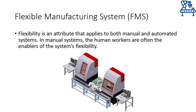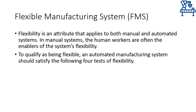In a flexible manual system, humans are there to fulfill the requirements of being flexible. Whereas for an automated system to be flexible, the machine should fulfill the conditions required for being flexible. To qualify as being flexible, a system must pass four tests.